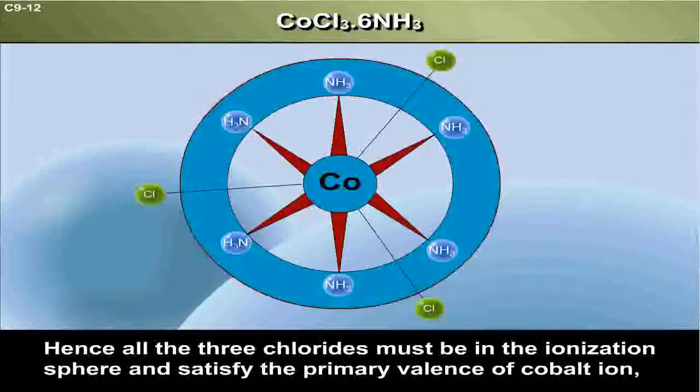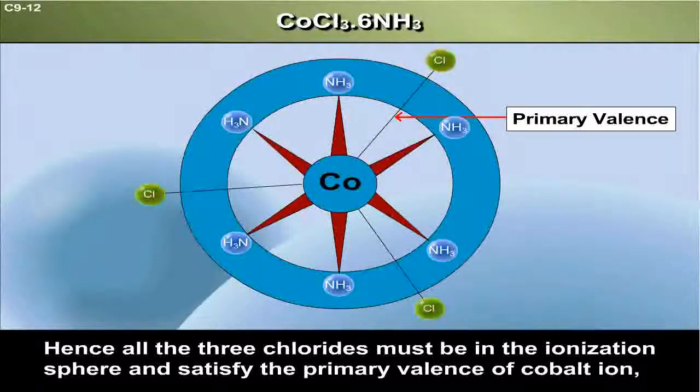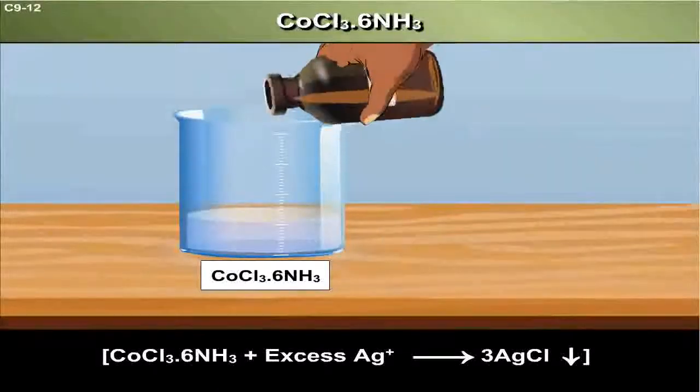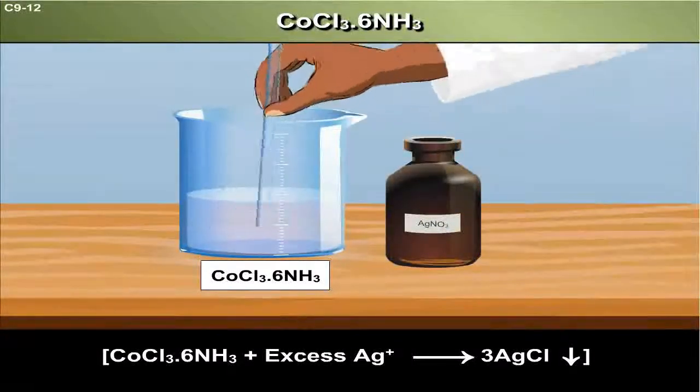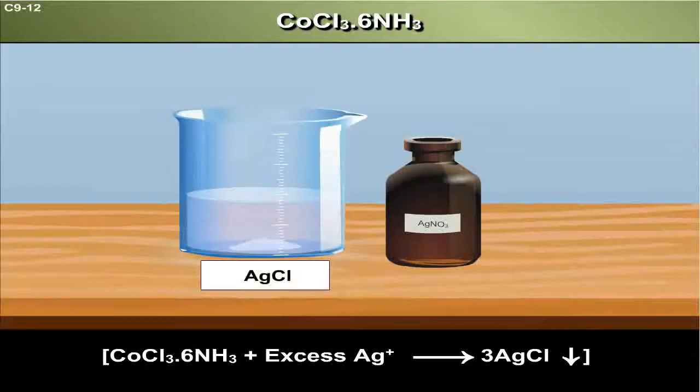Hence, all the three chlorides must be in the ionization sphere and satisfy the primary valence of cobalt ion. CoCl3·6NH3 plus excess Ag+ gives AgCl.